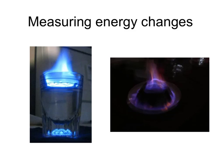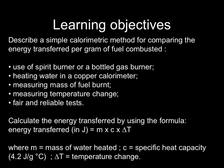This tutorial looks at how energy changes can be measured in chemistry and relates to some parts of P1 which involve energy changes being measured by using specific heat capacity. You should be able to describe a calorimetric method for comparing the energy transferred by, for example, a number of different fuels, and also be able to use the data from such an experiment to calculate the energy transferred using the formula where energy transferred equals the mass times specific heat capacity times the temperature rise.